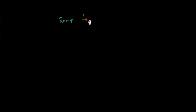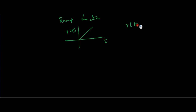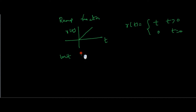The next signal is the ramp function. It is a signal which is a function of time and it looks like a ramp. It is denoted by r(t), where r(t) equals t for t greater than 0, and 0 for t less than or equal to 0. Another most important elementary signal is called the unit impulse or delta function, denoted by δ(t).